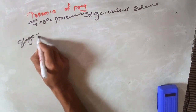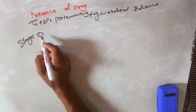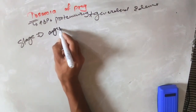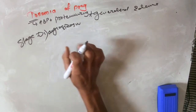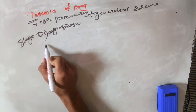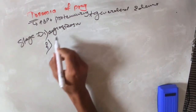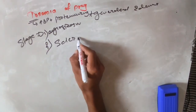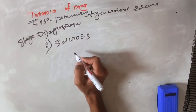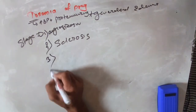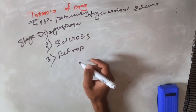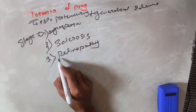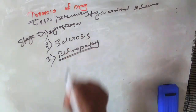Clinically, toxemia of pregnancy progresses through three stages: the angiospasm stage, where arterial spasm and contractions occur; followed by the sclerosis stage of the vessels; and finally the retinopathy stage, where hemorrhage, retinal edema, exudates, and retinal detachment can be seen.